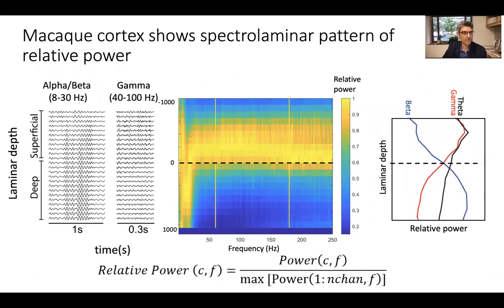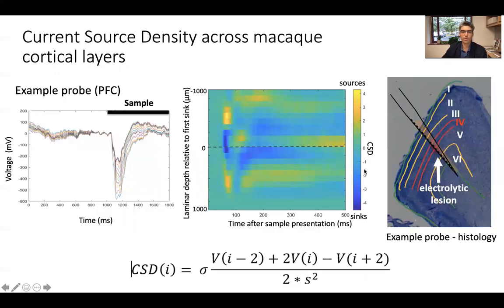It was striking to observe a pattern in the local field potential characterized by stronger relative power in the gamma band in the superficial layers and stronger relative power in the beta band in the deeper layers. Characterizing this relative power across all possible frequencies on the x-axis and recording depths on the y-axis, we observe a spectral laminar swoosh pattern. This pattern can also be summarized as line plots representing relative power in the beta and gamma frequency bands, and we use their crossover point as a criterion to align across probes.